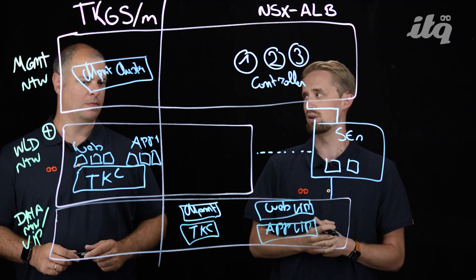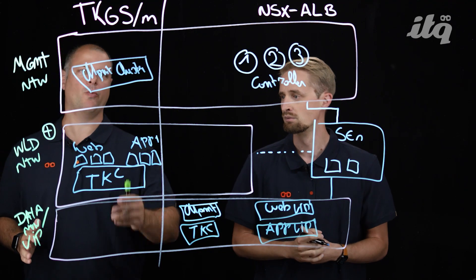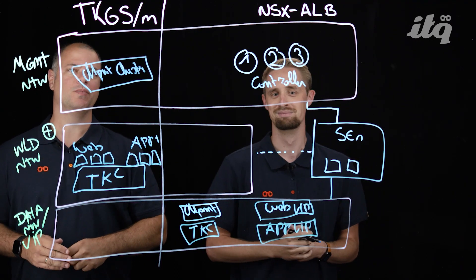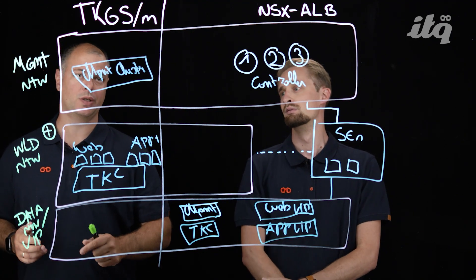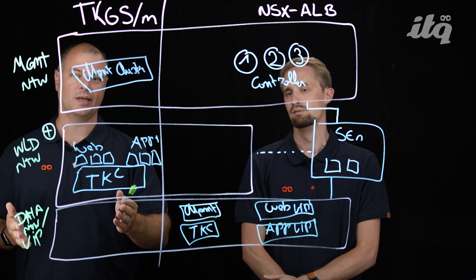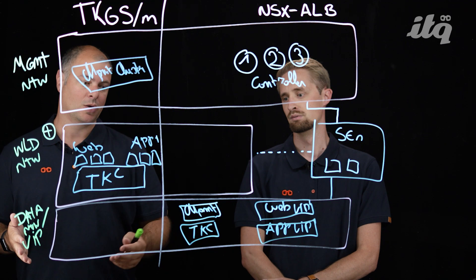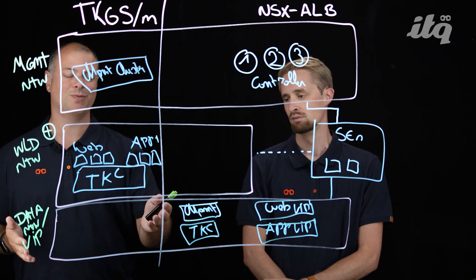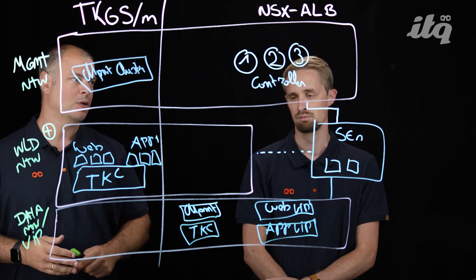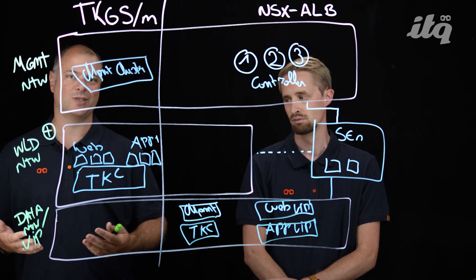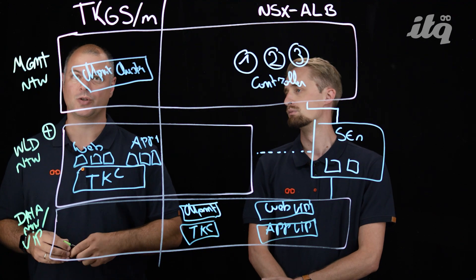To summarize, we have three or more networks — remember we can use multiple networks for segmentation and security. We have management clusters and TKCs which host your pods and applications. We have a VIP segment hosting VIPs for the management cluster, Tanzu Kubernetes clusters, and your applications — and this can be multiple VIPs. We have the service engines responsible for hosting the load balancers and handling communication.